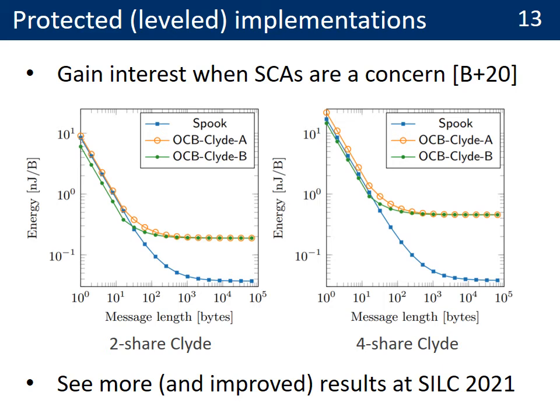Most importantly, the second table shows the overheads of the Clyde tweakable block cipher on top of the Shadow permutation. We observe that it remains quite limited — for example, for NU equals 8, it is between 5 and 10 percent of the total area. We also recall that unprotected implementations are not the best context for Spook, which is designed with side-channel security in mind. As soon as countermeasures against side-channel attacks are considered, leveled implementations enable significant gains over modes of operation without mode-level leakage resistance guarantees. This slide reports the energy gains of Spook compared to OCB instantiated with the tweakable block cipher Clyde-128, amortized or not. For long enough messages, the gains of Spook are significant, and they increase when the target security level against side-channel attacks increases, reflected here with the number of shares used for masking.